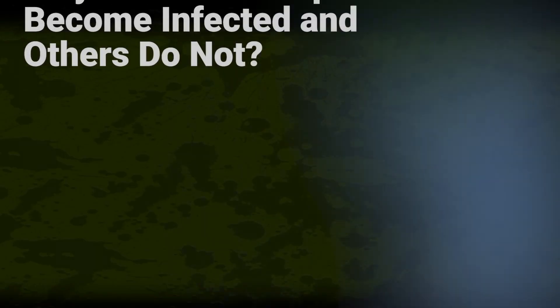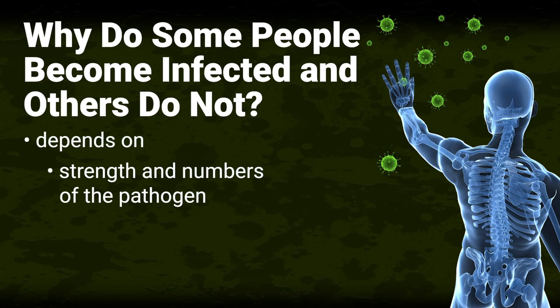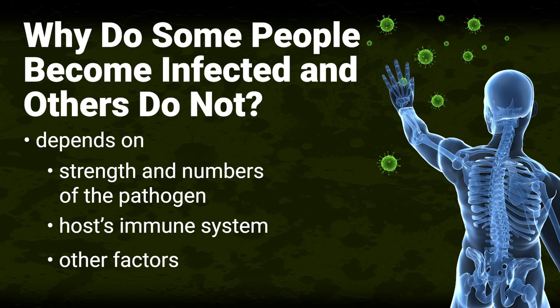Why do some people become infected and others do not? The reason depends on many different things, such as the strength and number of the pathogen, the strength and maturity of an individual's immune system, and other factors such as nutritional status, stress, environment, and pre-existing conditions like heart disease, cancer, or asthma.